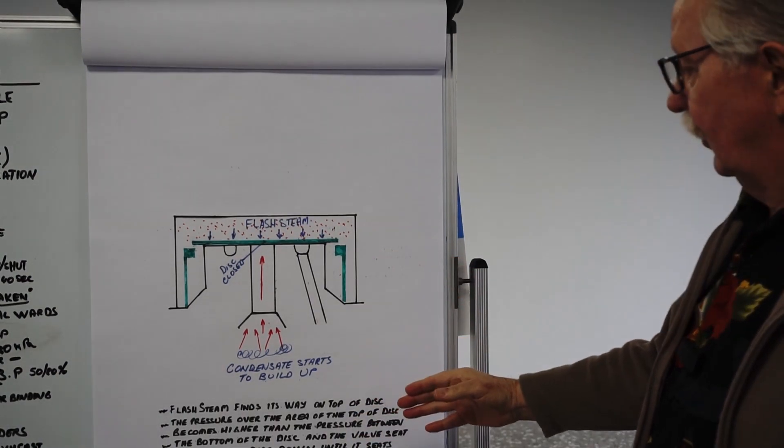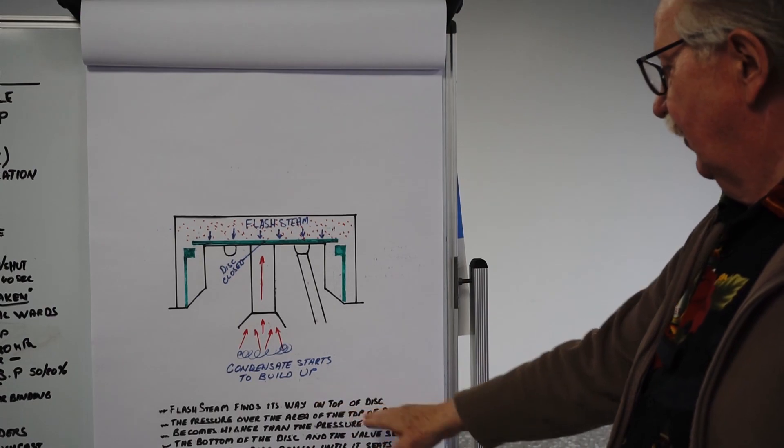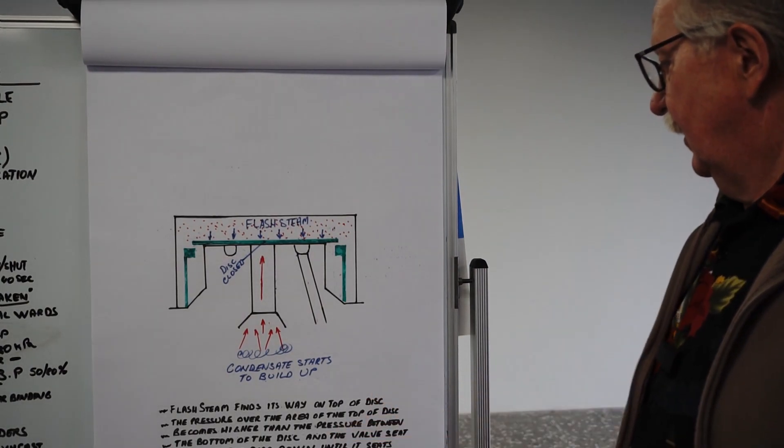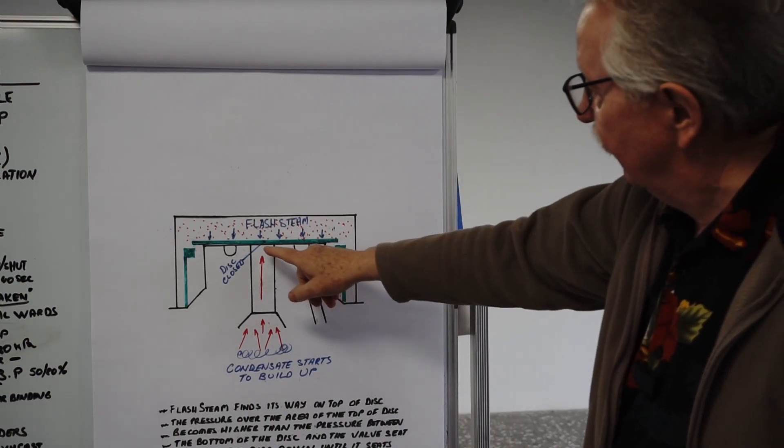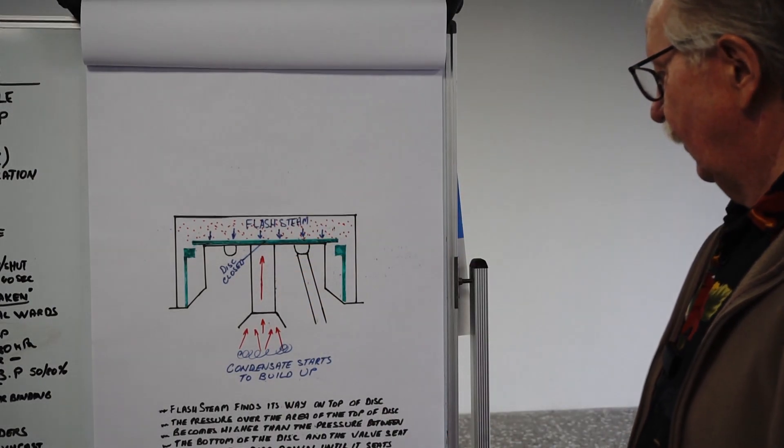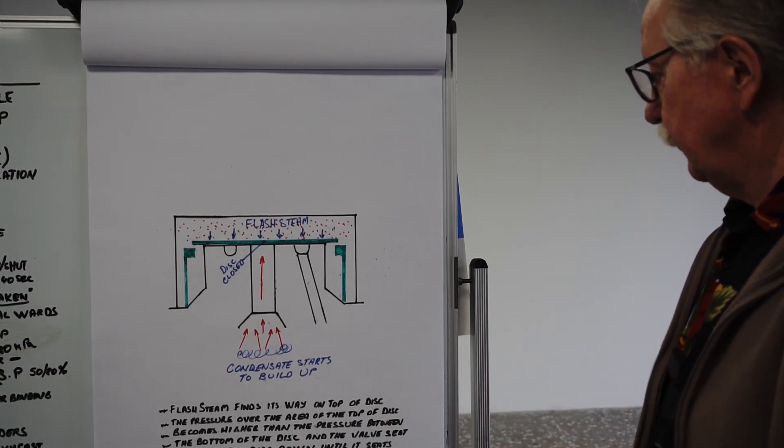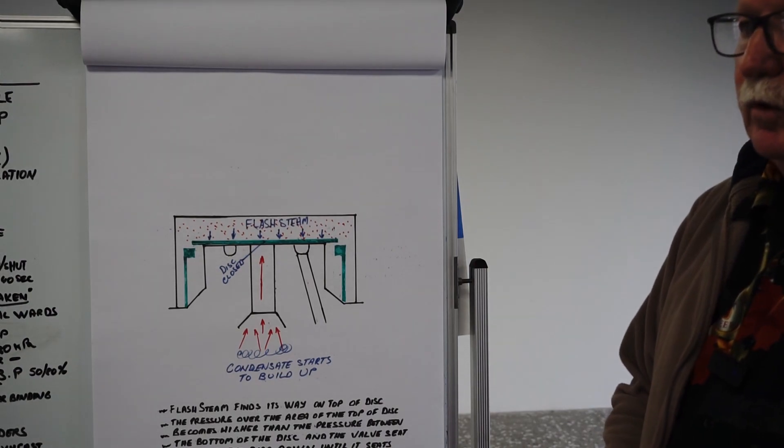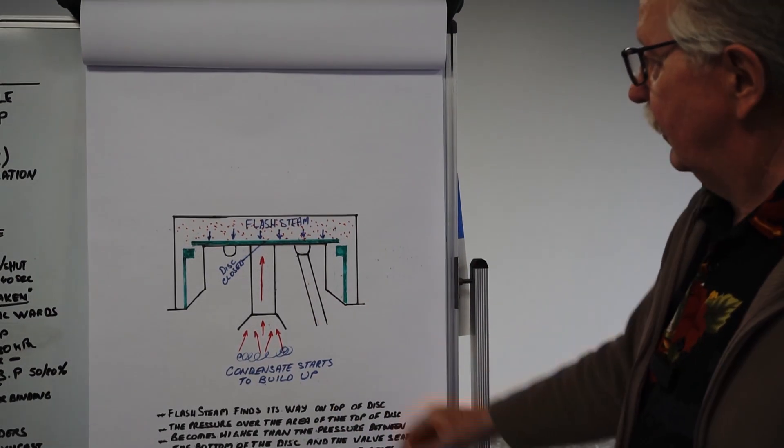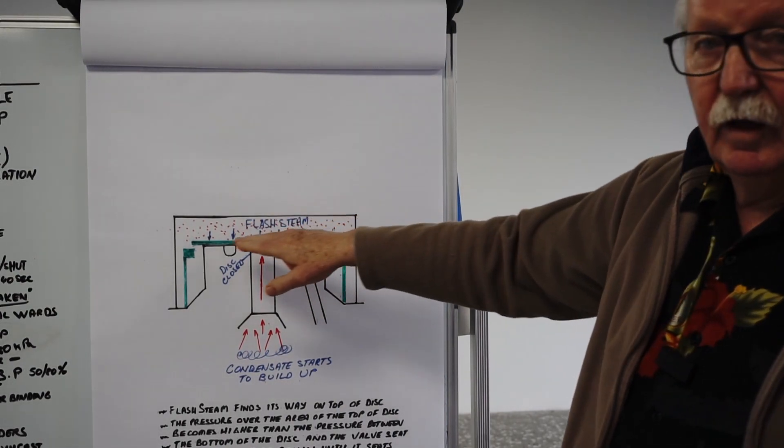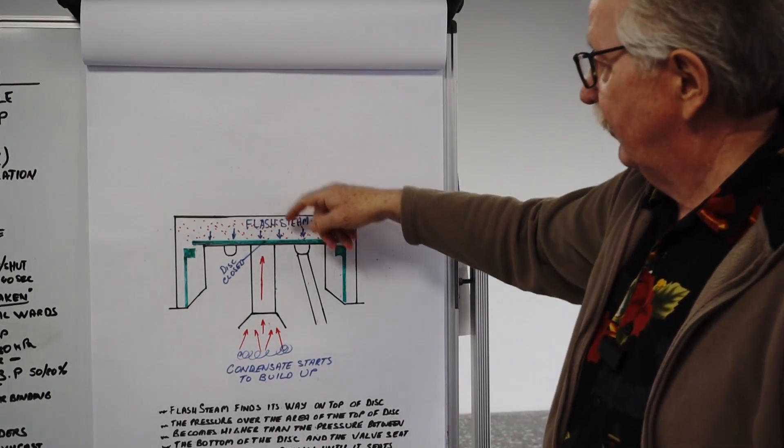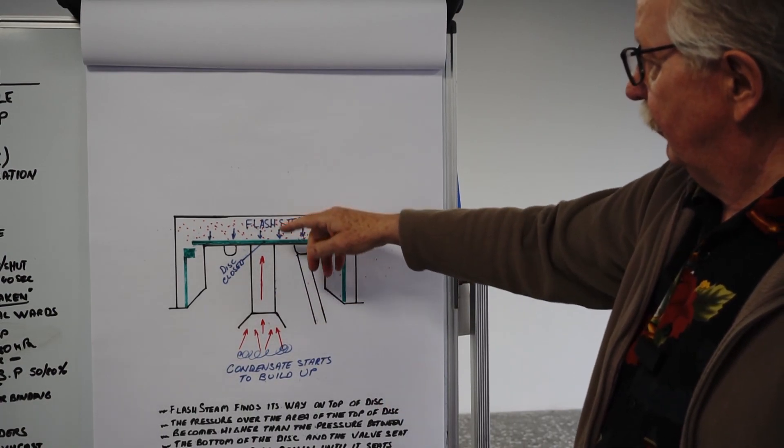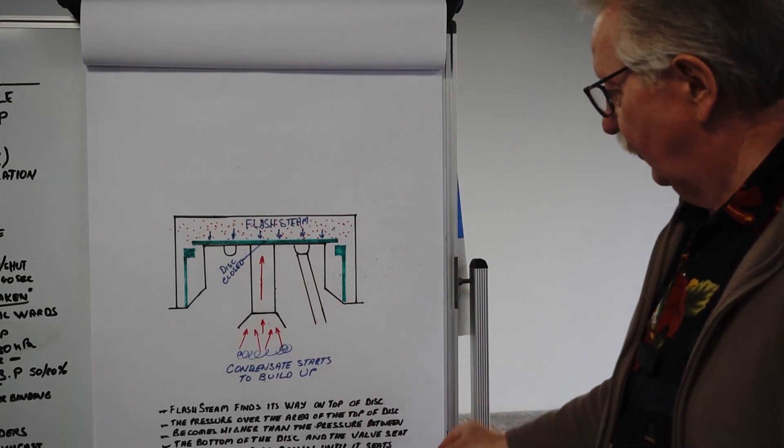I've sort of covered a lot of this in the other slide there, but what's happened here is the flash then finds its way up on top of the disc, forcing down on the larger surface area there. The pressure over the area of the top of the disc is greater than the small inlet port there, so it tends to overcome that and snap shut. Once it's forced down like that, condensate stops moving through the system and will start to cool down and build up in this area here. The cycle won't start until the flash steam that's in this control chamber radiates off to atmosphere and/or cools down sufficiently enough for it to condense. Once the pressure on the underside is greater than the pressure on the top, the cycle will start again.